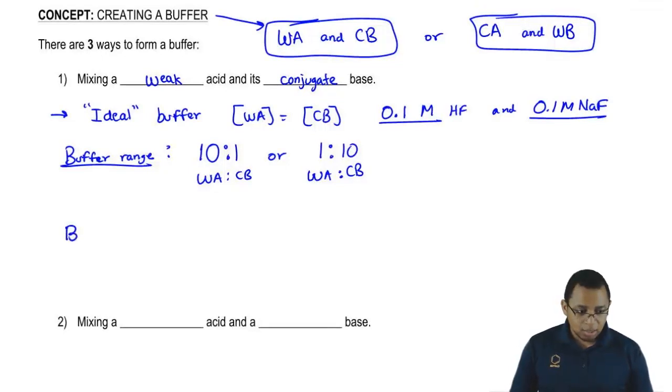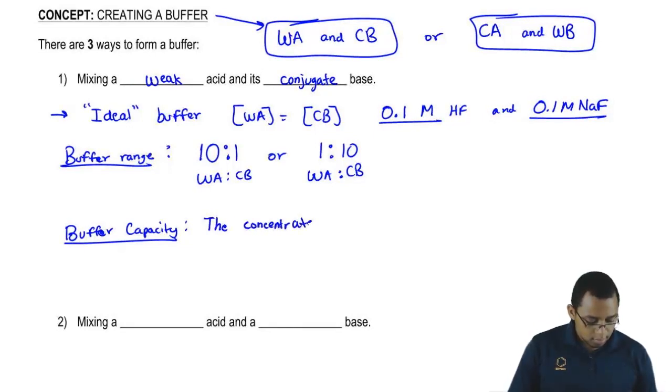Now connected to this is another topic which is called our buffer capacity. Buffer capacity, all it means is the more concentrated my weak acid and conjugate base, the better my buffer.